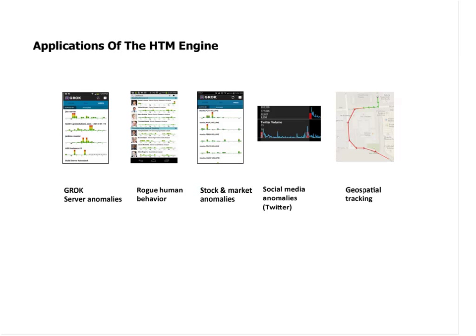We've applied this architecture to several different applications: detecting anomalies in servers and data structures, detecting anomalies in human behavior, financial markets, social media — detecting anomalies in Twitter streams — and even GPS and geospatial tracking.